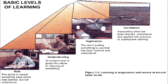The first level of learning is rote — the ability to repeat something without understanding the concept. In understanding, the person tries to comprehend or grasp the meaning of something. In application, one puts something to use — the thing which has been learnt or understood. In correlation, something is applied with the help of subsequent or previous knowledge.